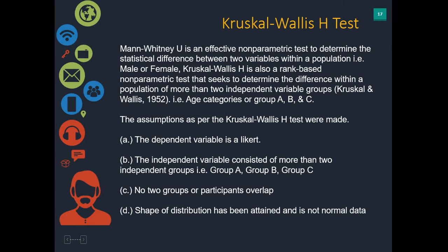Hello everyone and welcome to today's session, which is looking at how to do a Kruskal-Wallis H test in SPSS. By now you may well have done a chi-square test and then a Mann-Whitney U test from our last session. A Kruskal-Wallis H is also a rank-based non-parametric test similar to Mann-Whitney that seeks to determine the difference between a population of more than two independent variables.